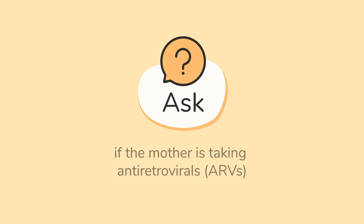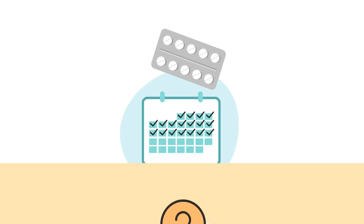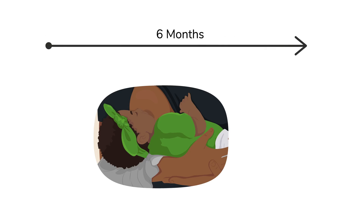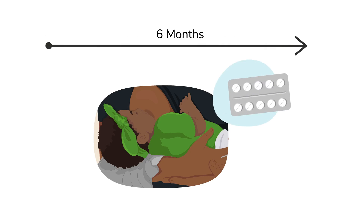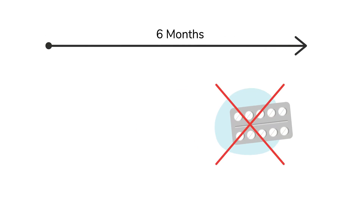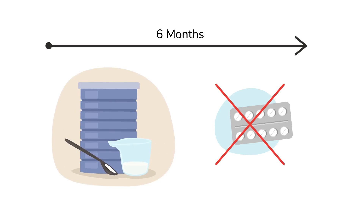If the mother is living with HIV and breastfeeding the child, ask her if she is taking antiretrovirals, or ARVs. It is essential to take these medications properly to reduce the amount of virus in the body and prevent transmission to her child. Exclusive breastfeeding for at least six months is recommended if the mother is taking ARVs as prescribed. If the mother is not on ARVs, formula feeding or safe alternatives to breast milk are recommended if this is a feasible option for the mother.